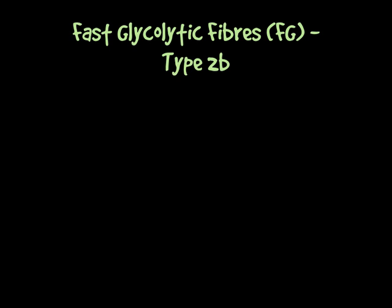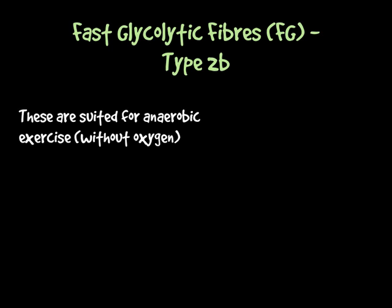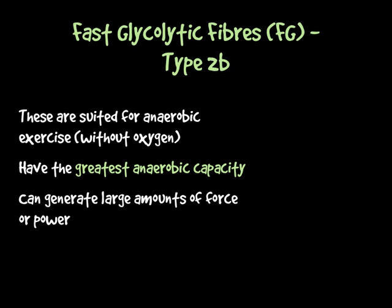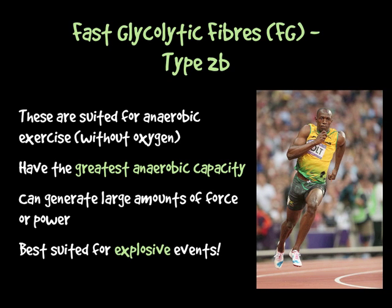The last type is fast twitch fast glycolytic fibres, FGs or type 2B. Like type 2A, these are suited to anaerobic exercise with no oxygen required. They have the greatest amount of anaerobic capacity, so they can generate a large amount of force or power, and are best suited for explosive events — anything where you need to generate large force very quickly over a short period of time. Prime examples are 100 metres, 200 metres, and don't forget the throws and jumps: long jump, high jump, pole vault, as well as discus, shot put, and javelin.